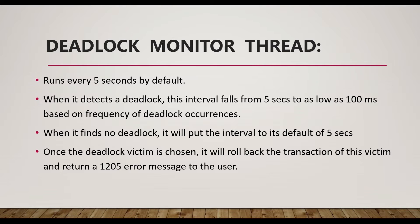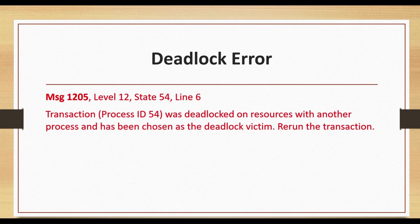Once a deadlock victim is chosen, it will roll back the transaction of that victim and return error 1205 to the user, which states the transaction was deadlocked on resources with another process and has been chosen as a deadlock victim. The user can rerun the transaction. All changes performed by the deadlock victim will be rolled back.